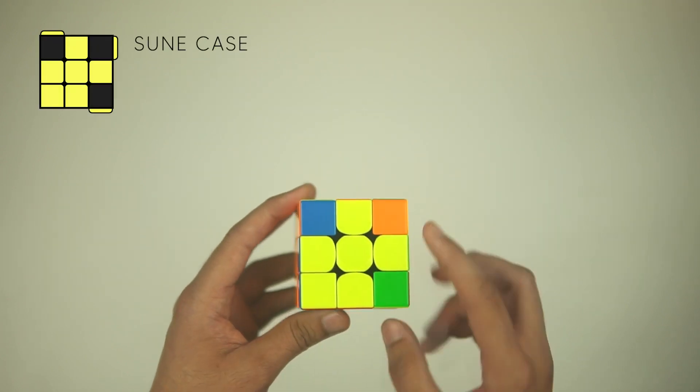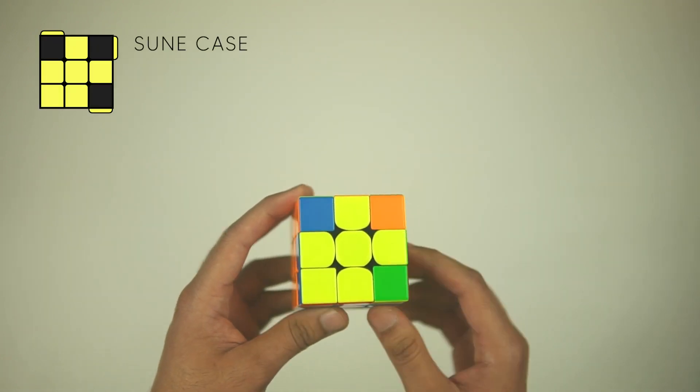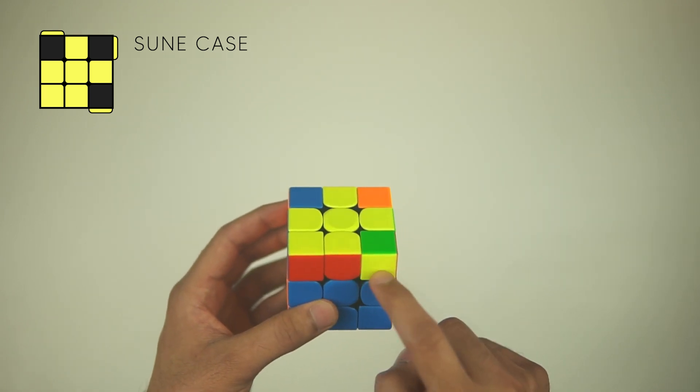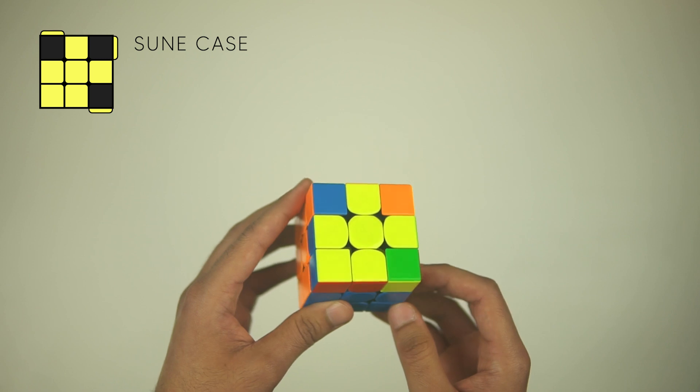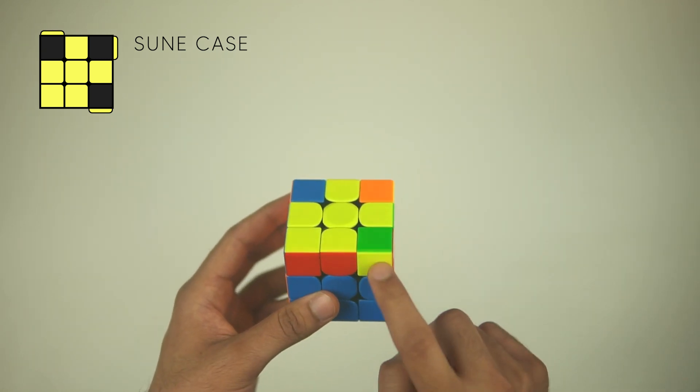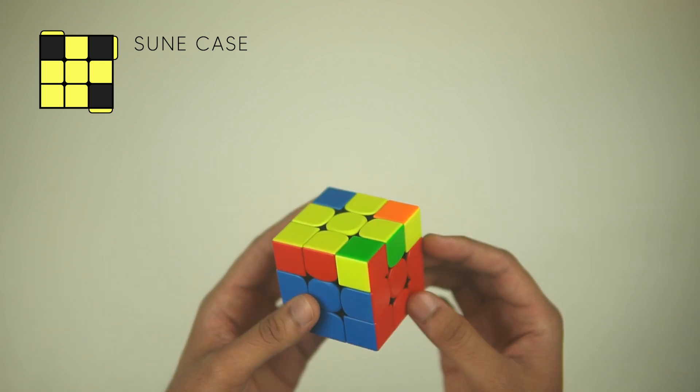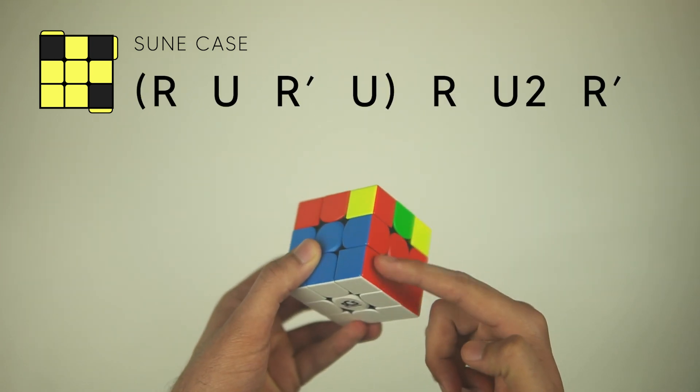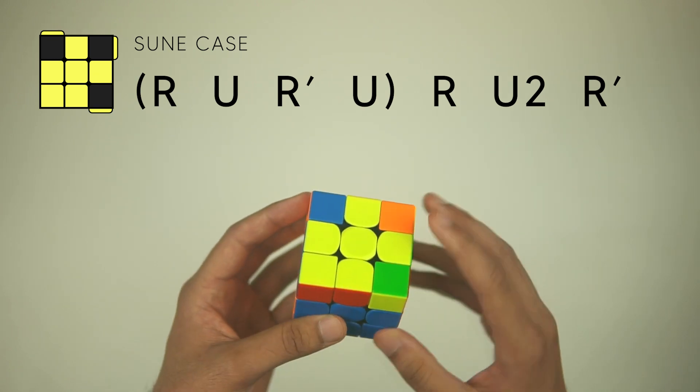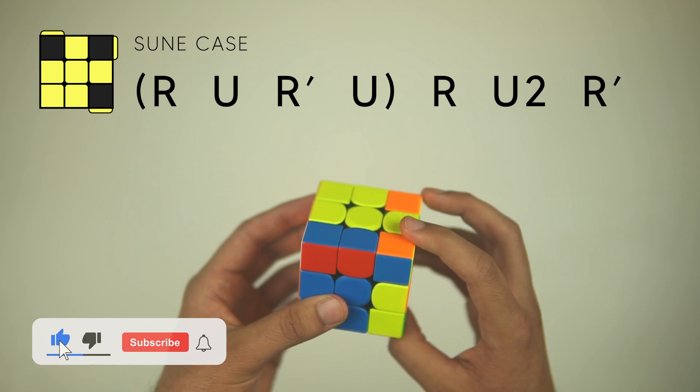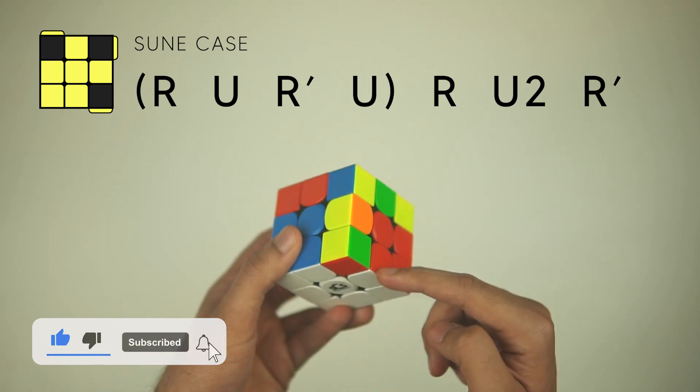You recognize the Sune algorithm when you have only a single yellow corner solved, and also you're going to have this on the right, this yellow is going to be facing you. That's one important distinction because there's an anti-Sune case where you don't have the yellow facing you. A really easy way to remember this algorithm is by tracking what happens to this F2L pair. We're going to do an R, U, R' to take the F2L pair out and return the cross.